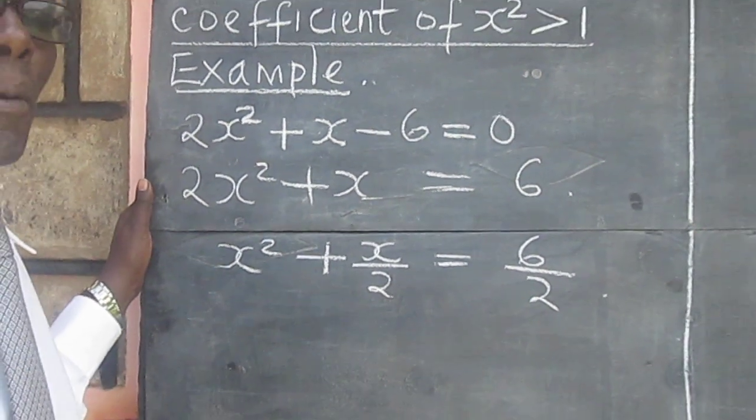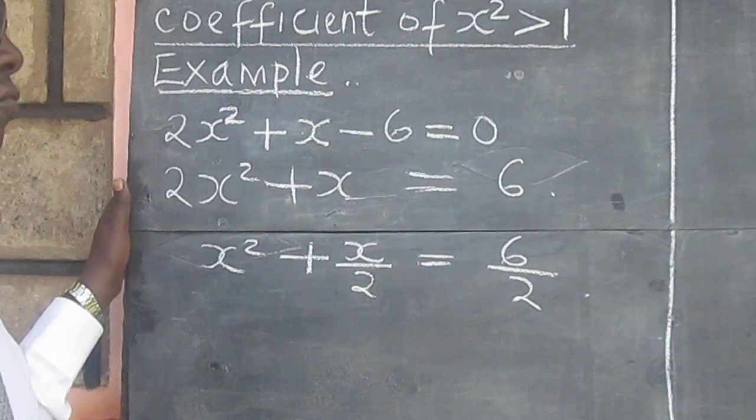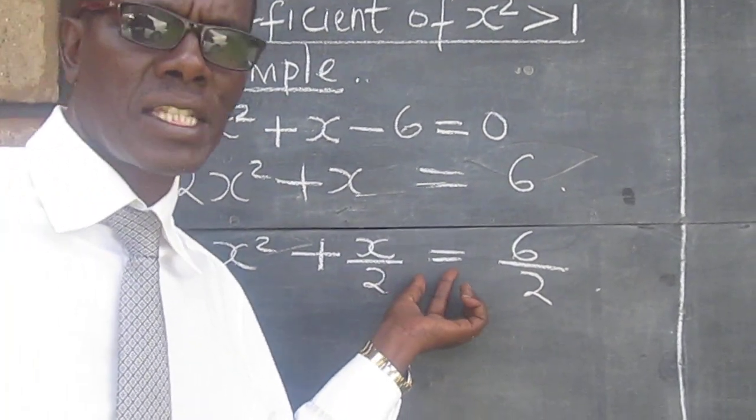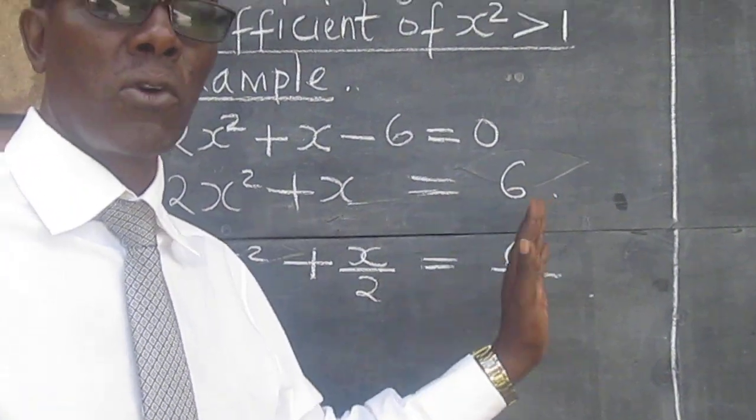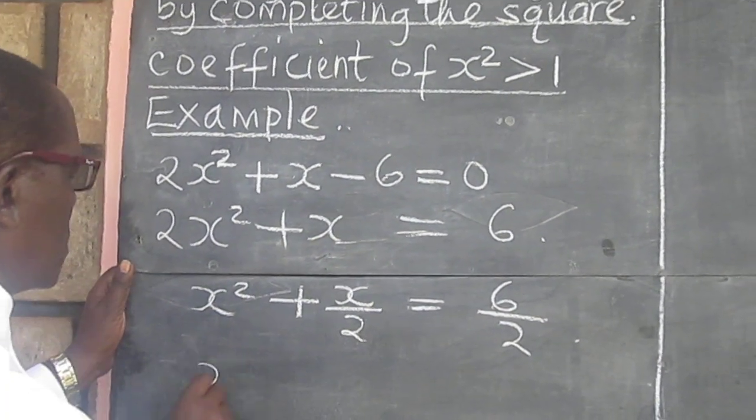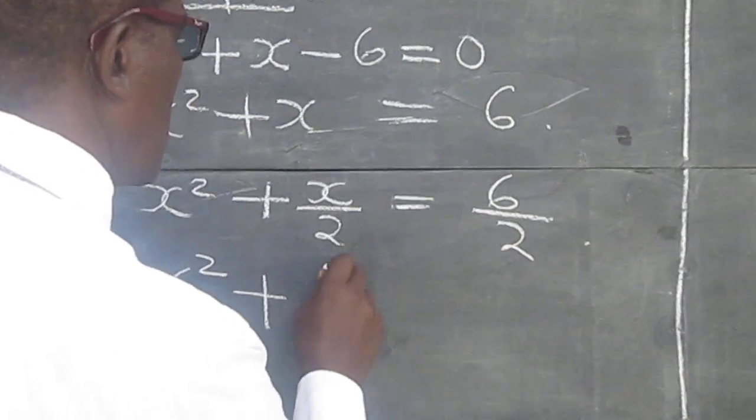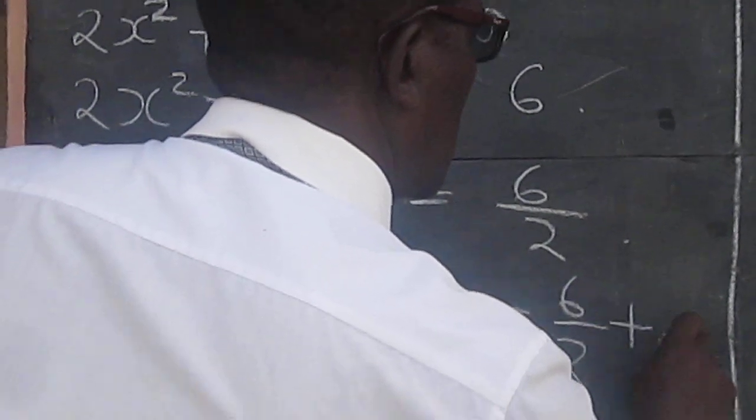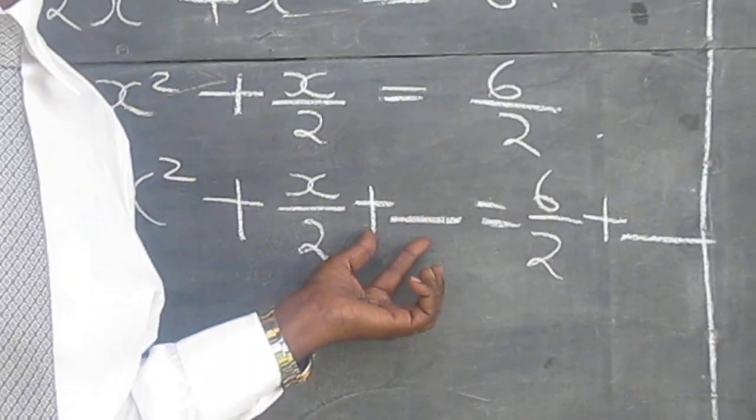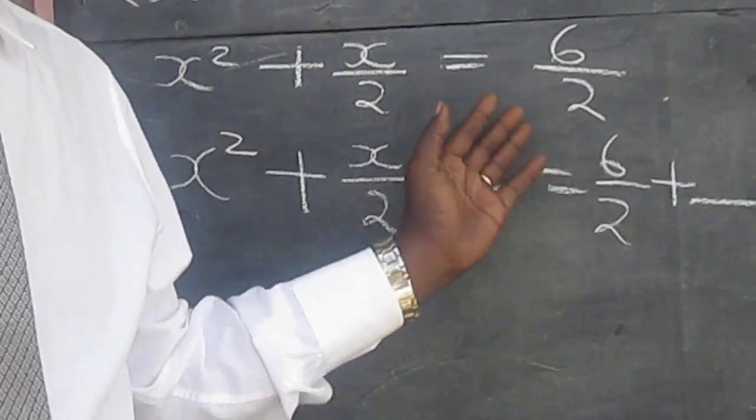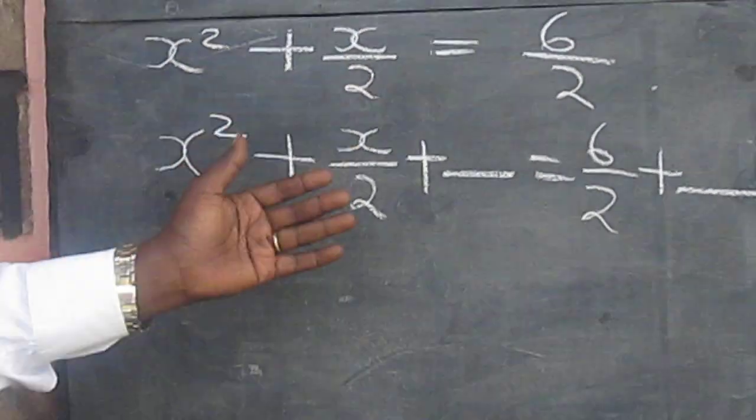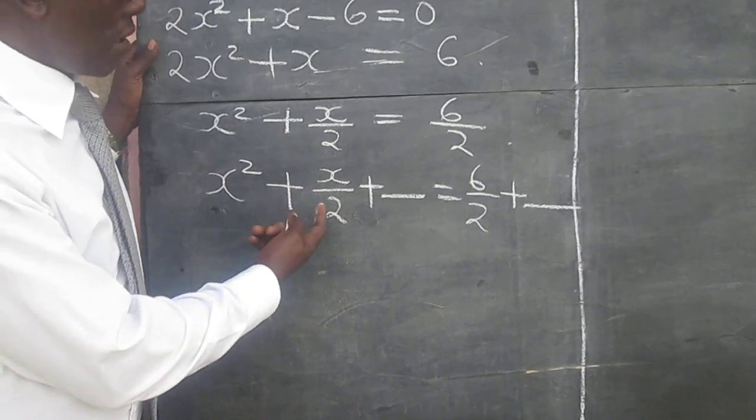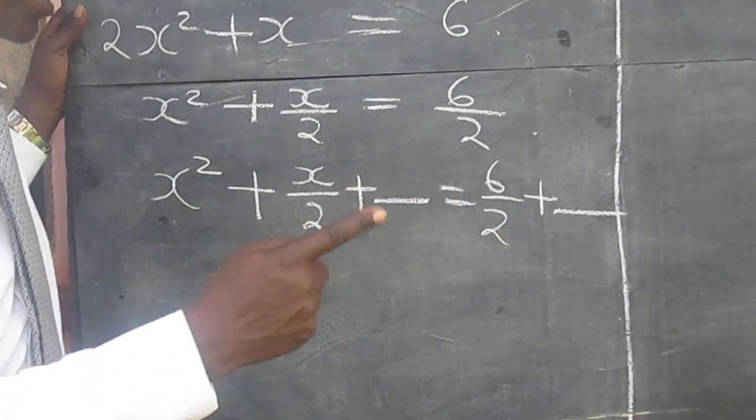The next step is completing the square. Remember, we are looking for something to add on this side to complete the square. But we must remember, because there is an equal sign, we must do that addition on both sides. So the dash we have put here will be completed using the half of the coefficient of the middle term squared. In this case, the coefficient of x, which is the middle term, is a half.